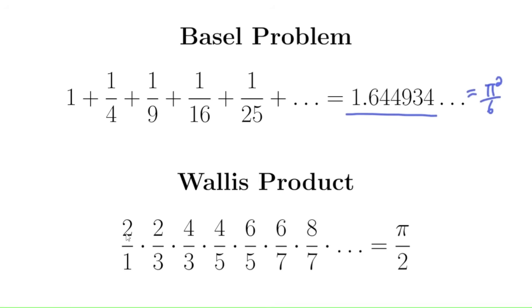The Wallis product says if you take 2/1 and multiply by 2/3, then multiply by 4/3, and notice the pattern: we have 2, 2, 4, 4, 6, 6, 8, 8 in the numerator and 1, 3, 3, 5, 5, 7, 7 in the denominator. If you keep multiplying, this is going to get closer and closer — it's going to converge to pi/2. I mean, that's incredible.